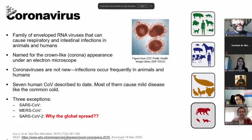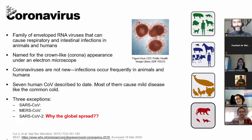Coronaviruses are a family of envelope RNA viruses that cause respiratory and intestinal infections, both in animals and in humans. They are named coronavirus because of their corona-like appearance under the electron microscope. Coronaviruses are not new, and their infections occur quite frequently, both in animals and in humans. To date, there are seven human coronaviruses described, and most of them cause mild disease, similar to the common cold.